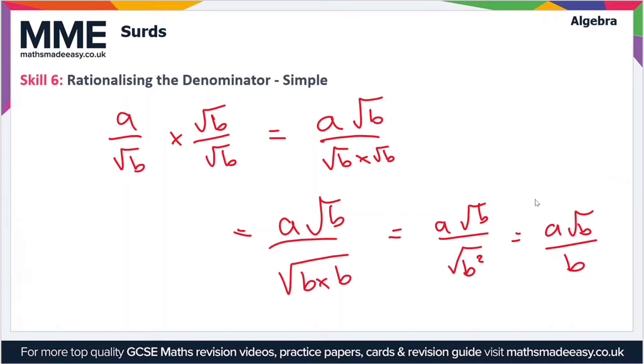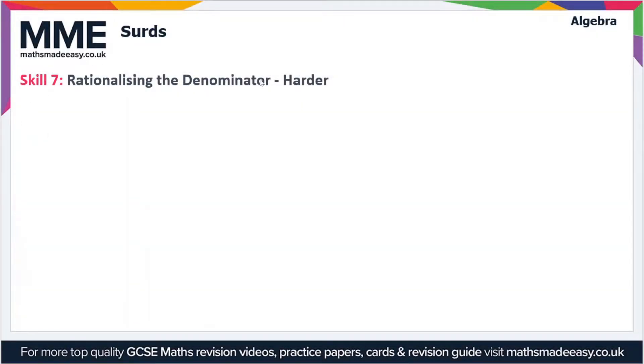So this is known as Rationalising the Denominator. As I say, all we've done is remove the surd from the denominator. But the value here is just the same as it was to begin with. So let's move on to the more complicated example.